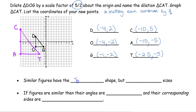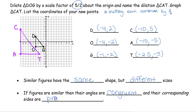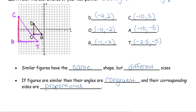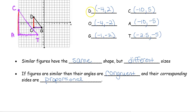There is my dilated triangle creating that similar figure. Similar figures are figures that have the same shape but different sizes. It still looks like the same kind of triangle — it's still a right triangle — but we have one small one and one larger one. If figures are similar, their corresponding angles are congruent and their corresponding sides are not congruent but proportional.